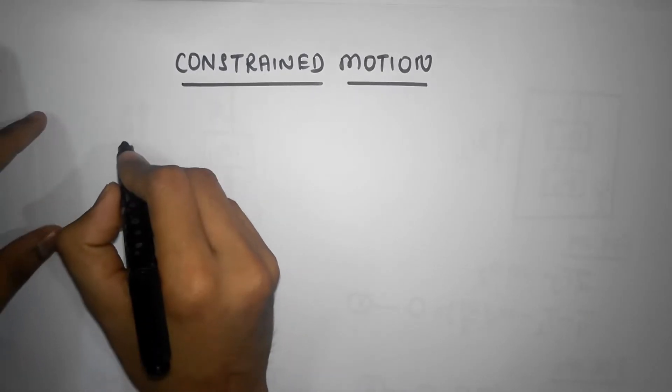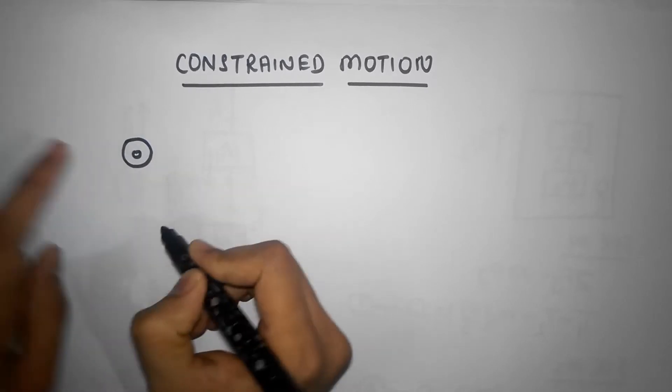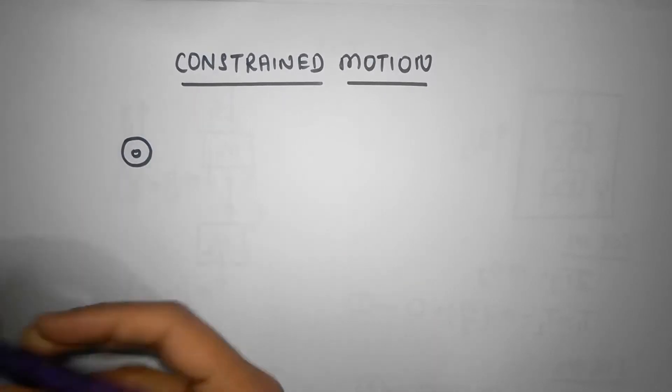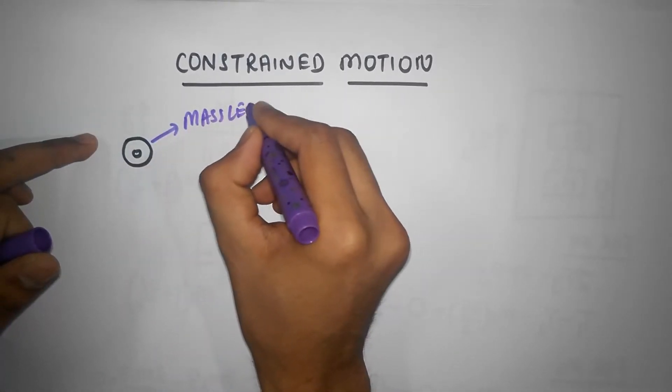This is gonna be the simplest kind of constrained motion that we will deal with. Imagine you have a pulley, and that's a massless pulley. Let me write that down somewhere. That's a massless pulley.